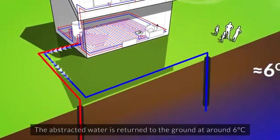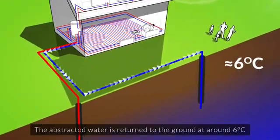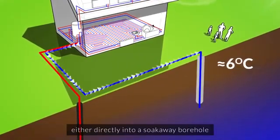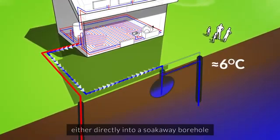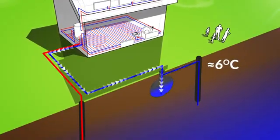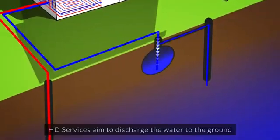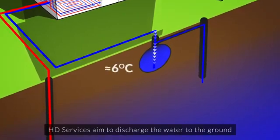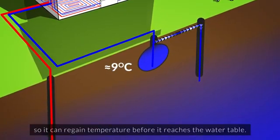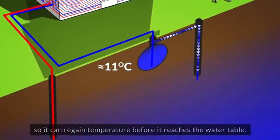The abstracted water is returned to the ground at around 6 degrees Celsius, either directly into a soak away borehole or via a water harvesting tank. HD services aim to discharge the water to the ground above the water table so it can regain temperature before it reaches the water table.